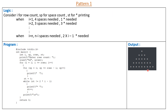For the half diamond pattern we need three counters: I for the row counter, SP for printing the spaces, and ST for printing the star. When I equals 1, four spaces and 1 star are needed. When I equals 2, three spaces and 3 stars are needed. When I equals 3, two spaces and 5 stars are needed. So we can say that when I equals n, n minus I spaces are needed and 2 multiplied by I minus 1 stars need to be printed.